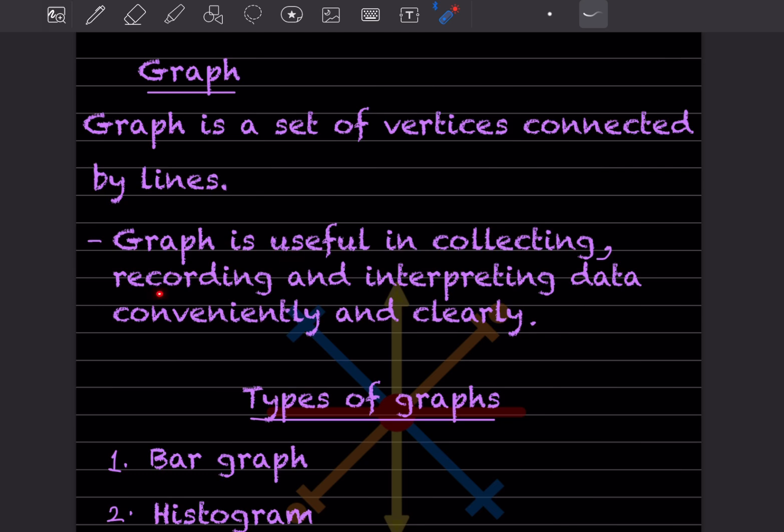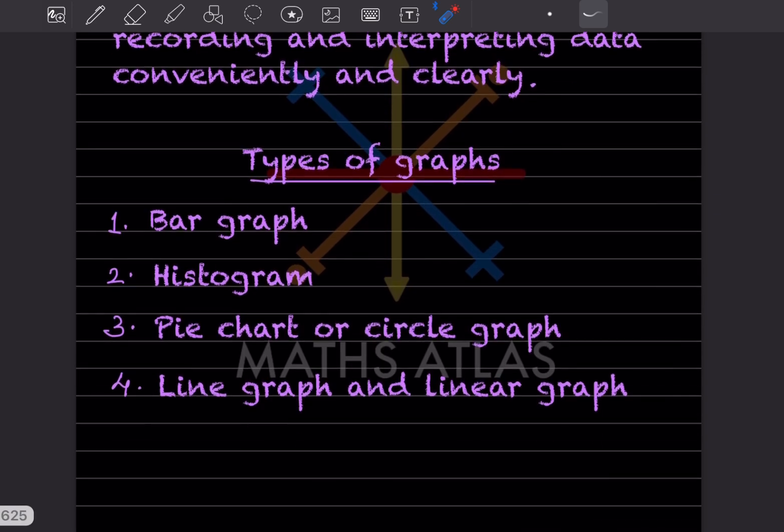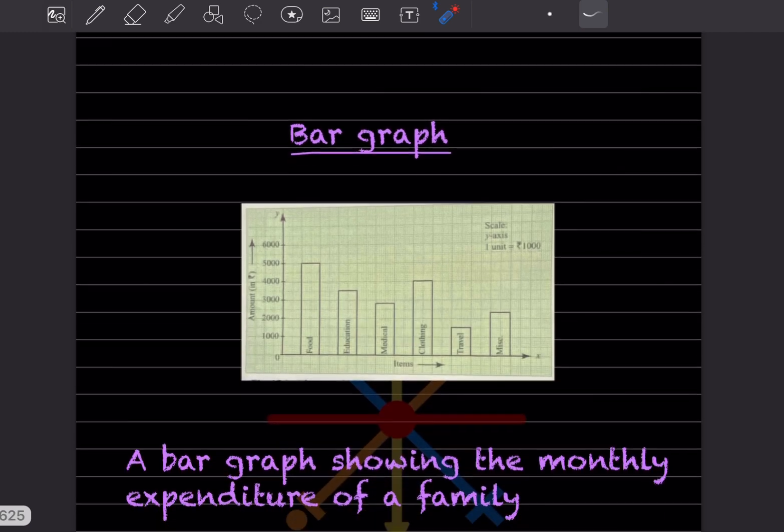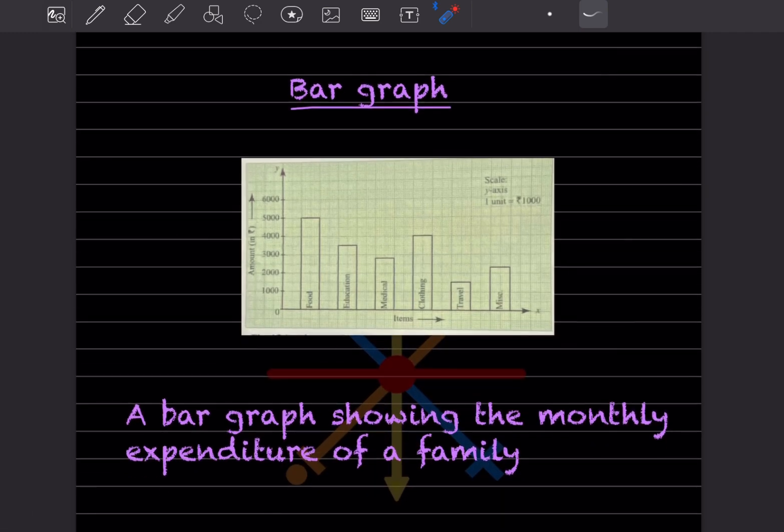There are different types of graphs: bar graph, histogram, pie chart (also called circle graph), and line graph (also called linear graph). Here we can see how it looks like.